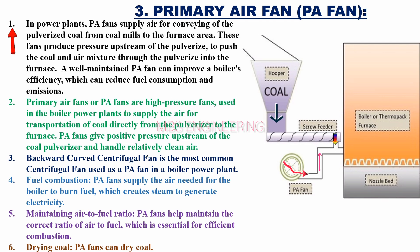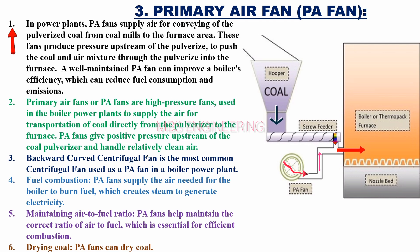Please refer to the schematic layout — PA fans supply air for conveying the pulverized coal from coal mills to the furnace area, producing pressure upstream of the pulverizer and pushing the coal and air mixture through the pulverizer into the furnace.